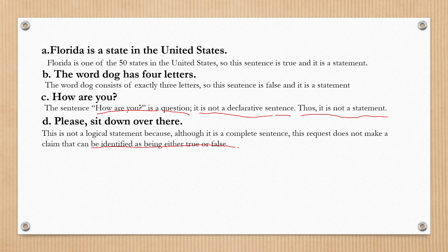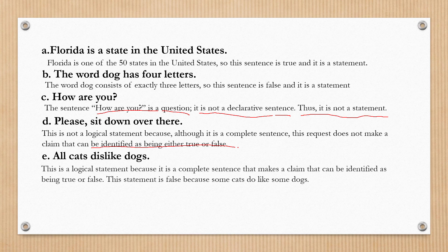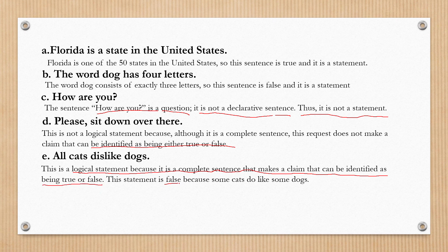Letter E: 'All cats dislike dogs.' This is a logical statement because it is a complete sentence that makes a claim that can be identified as being true or false. However, this statement is false, because some cats do like some dogs.